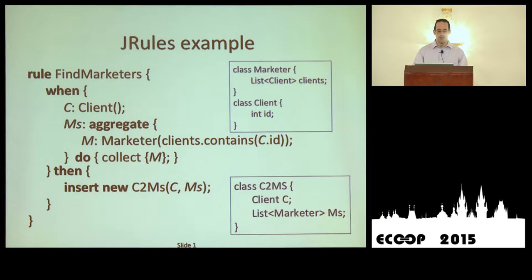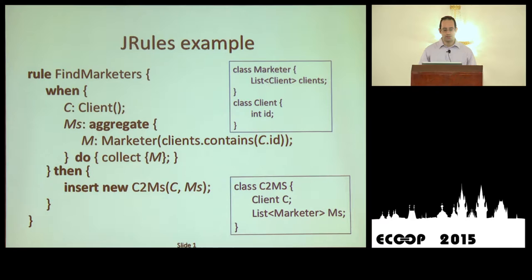The idea of JRules is that there's a working memory which has different elements in it — these are like facts. You write rules that search over the working memory elements and try to find elements that match the patterns you specify, and then you do certain actions. In this example, the working memory has elements that are clients and some are marketers, and marketers have a list of clients they care about.